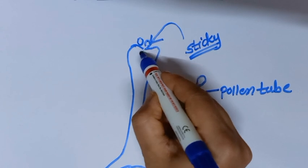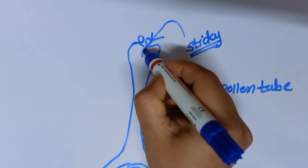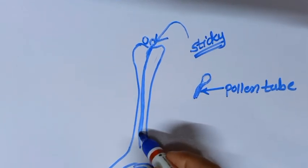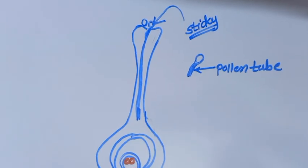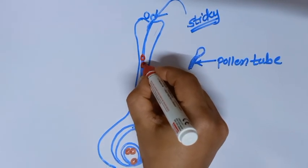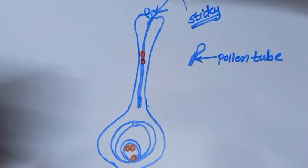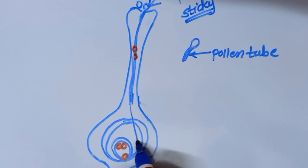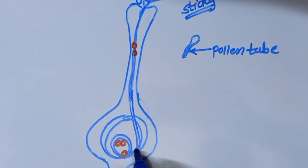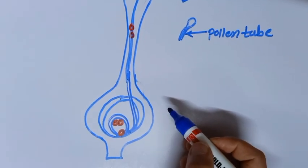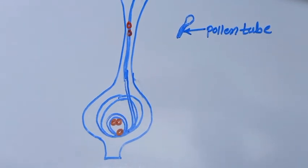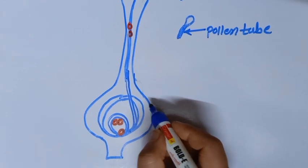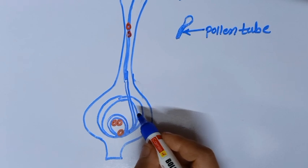This pollen tube travels through the style, which is a hollow part, so the pollen tube can travel through it. The pollen tube carries two male gametes along with it. This pollen tube travels through the hollow style and then reaches the ovary. Inside the ovary, there are two or more ovules. In each ovule, there is an embryo sac — a very transparent covering made up of cells produced by meiosis.